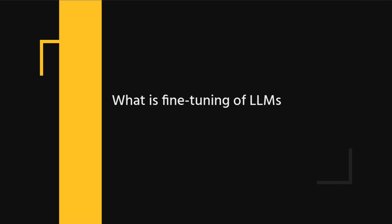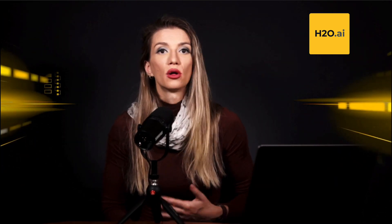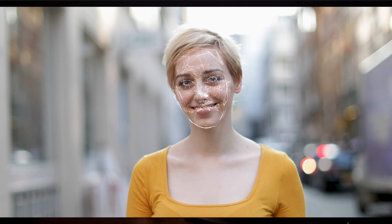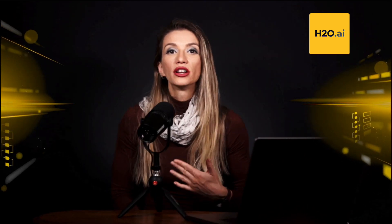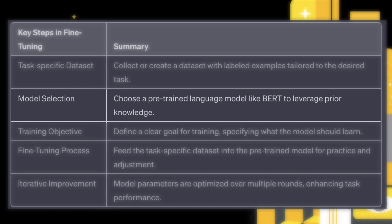Once the language model completes its pre-training on a vast amount of text data, it goes through another important step called fine-tuning. Fine-tuning is like giving the model specialized training for specific tasks, like understanding sentiment in sentences or recognizing named entities. During this stage, the model's parameters are adjusted to become really good at the new task while keeping the knowledge gained during pre-training. For the task-specific data step, we collect or create a special dataset with labeled examples for the task we want the model to do. For example, if we want the model to understand feelings in sentences, we get a dataset with sentences marked as positive, negative, or neutral.